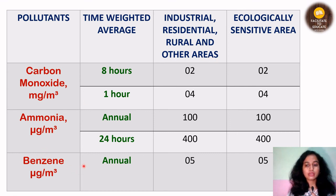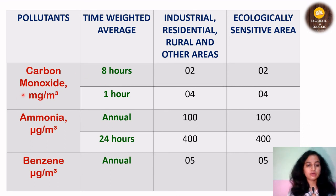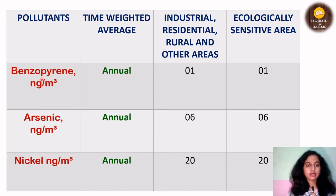You need to keep in mind which gases are measured only annually, and which are measured only for 8 hours or 1 hour, as well as the units. Next are benzopyrene, arsenic, and nickel — the units change for all three. These are also measured only annually. For benzopyrene, it is 1; for arsenic, it is 6; and for nickel, it is 20, in both area types.